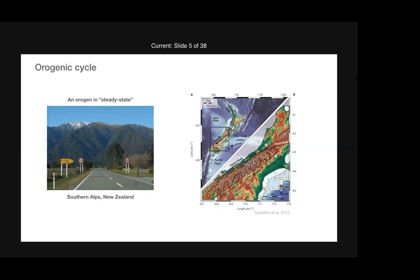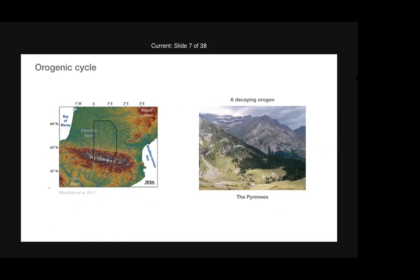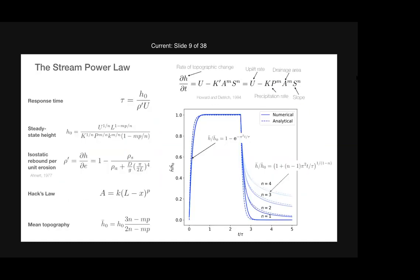The end of the cycle is: if you stop uplifting, the topography just dies away. For many orogens, the decay stage lasts much longer than the growth stage. As an example, the Pyrenees — the collision stopped about 25 million years ago, and they are still a pretty substantial topographic feature. If you compare the Pyrenees to the Southern Alps, they are very similar in height, shape, and mass.